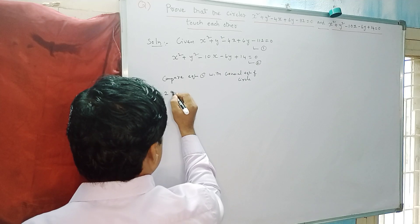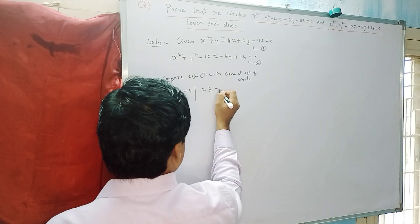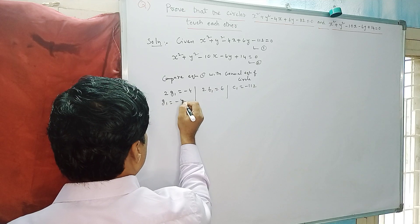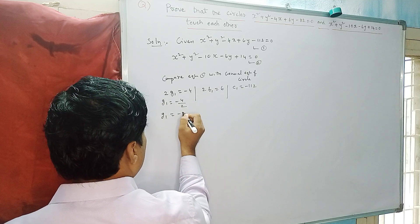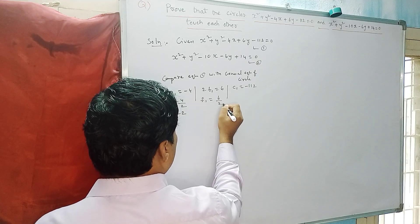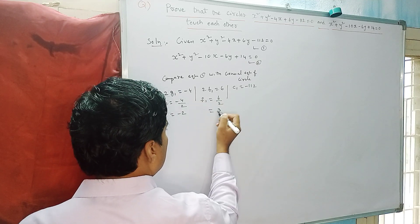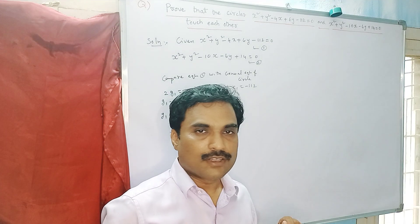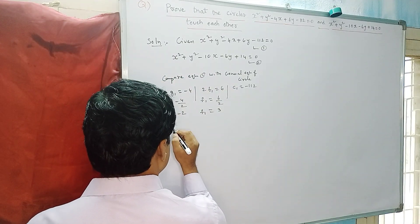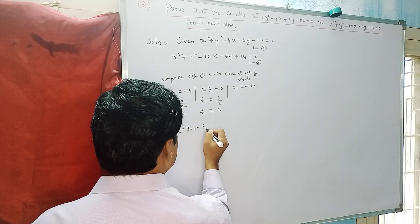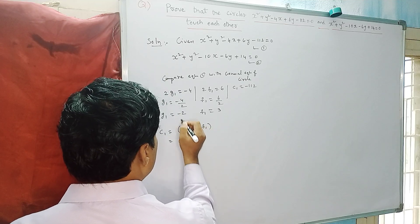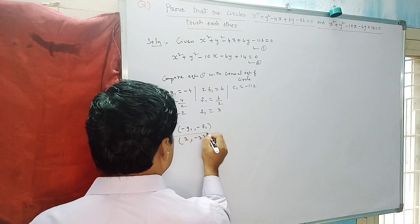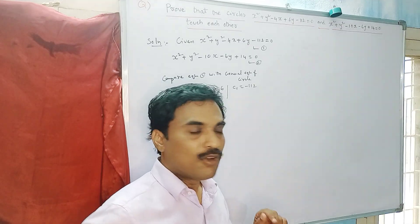Comparing equation 1 with the general form, we get 2g1 = -4, 2f1 = 6, and c1 = -112. So g1 = -4/2 = -2, and f1 = 6/2 = 3. The center C1 is given by the formula (-g1, -f1). Since g1 = -2, we get -g1 = +2, and since f1 = 3, we get -f1 = -3. Therefore, C1 = (2, -3).